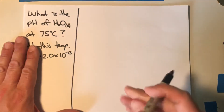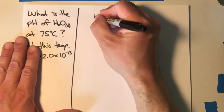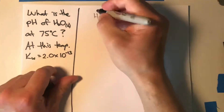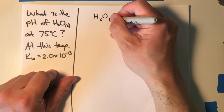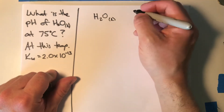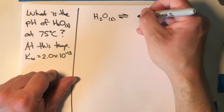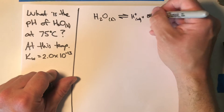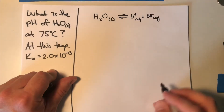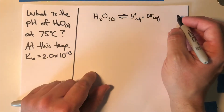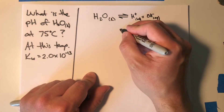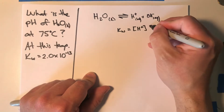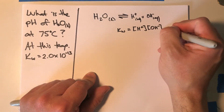When we talk about the auto-ionization of water, what we mean is that water — even pure water all by itself in a beaker — is going to dissociate just a little bit into H+ and OH−. We give a special name to this equilibrium: it is called Kw. The Kw is equal to the concentration of the H+ ions times the concentration of the hydroxide ions.